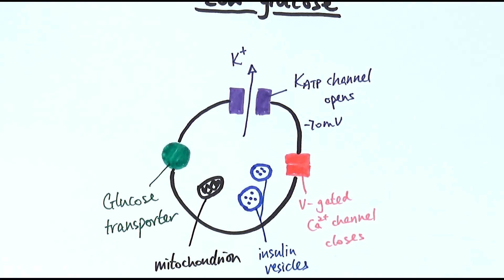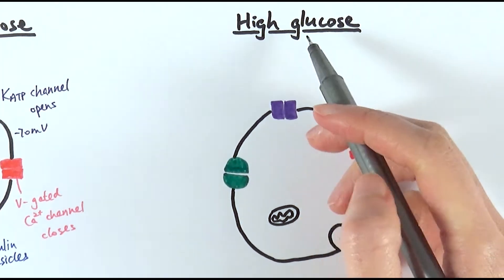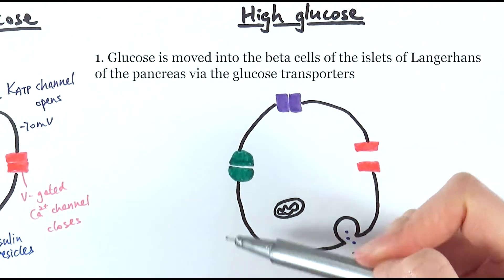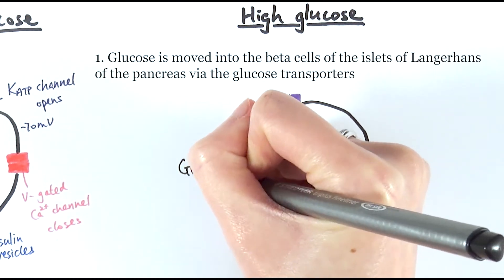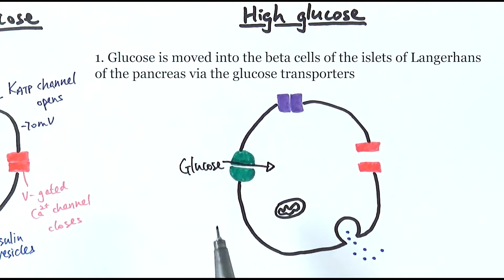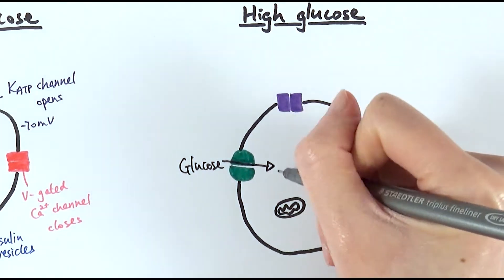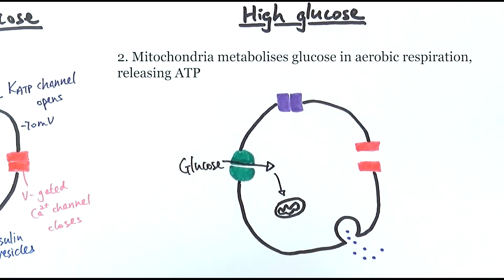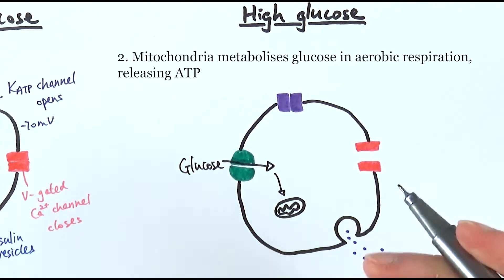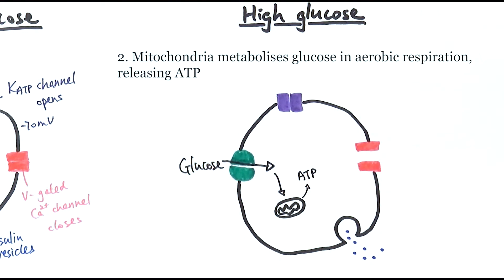Things change when there is a high glucose level. I've split this up into six different stages. First, when there is a higher glucose level, the beta cells detect it because they have glucose transporters. When there is a lot of glucose, it can be moved into the beta cells by the glucose transporters. Once inside, the glucose can be metabolized by the mitochondria, producing ATP through aerobic respiration.